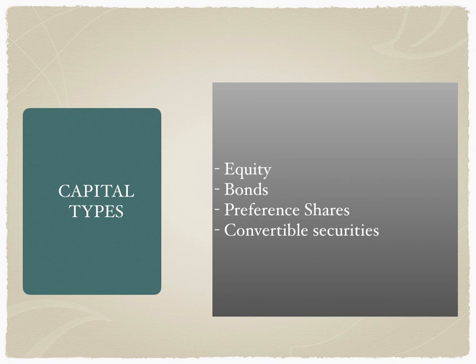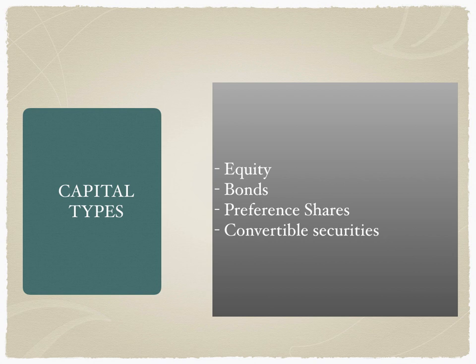Bonds have many variations: fixed rate bonds, floating rate bonds, medium term bonds, long term bonds, foreign currency convertible bonds, foreign currency bonds, euro bonds, etc. Preference shares behave like a combination of both bond and equity. Convertible securities are issued as debt instruments but on redemption the investor gets common stock in the new company according to the swap ratio. We will have separate videos for corporate actions on equity, bonds, preference shares, and convertible securities.